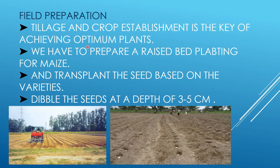For field preparation, first select the field, then make tillage with the help of an MB plow or soil inverting plow to a depth of 20 to 25 cm. Make 2 to 3 harrowings and level the soil for good water holding capacity. Maintain crop establishment for optimum plant stand. Prepare raised beds using a tractor, and dibble seeds based on variety spacing at a depth of 3 to 5 cm.